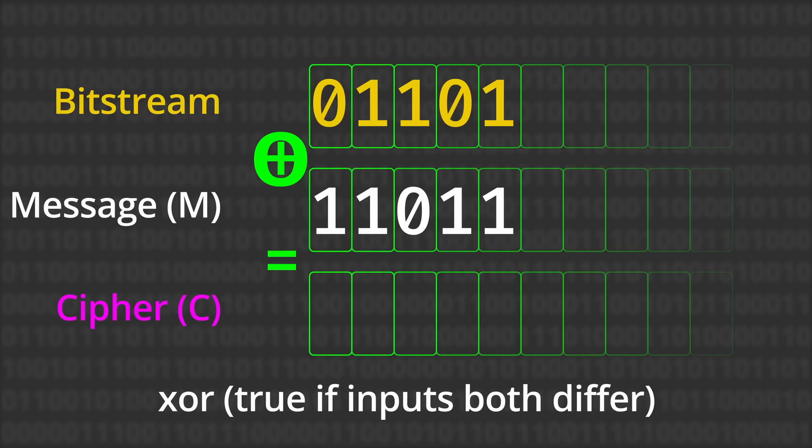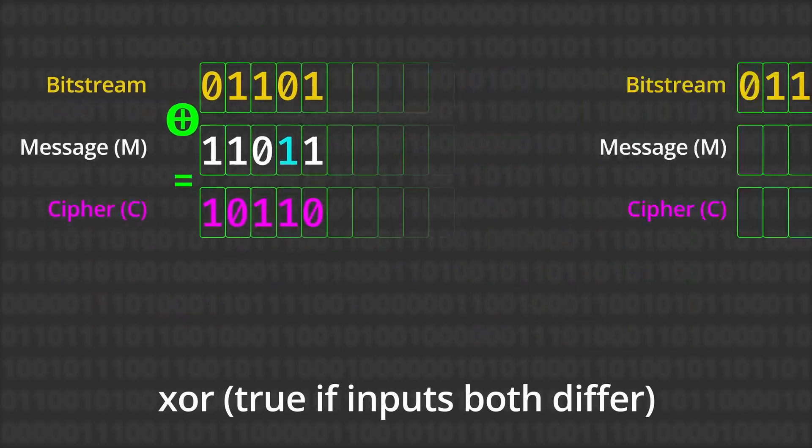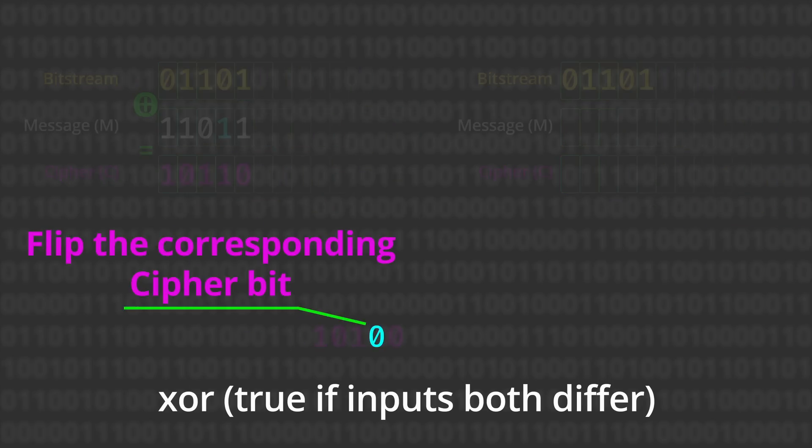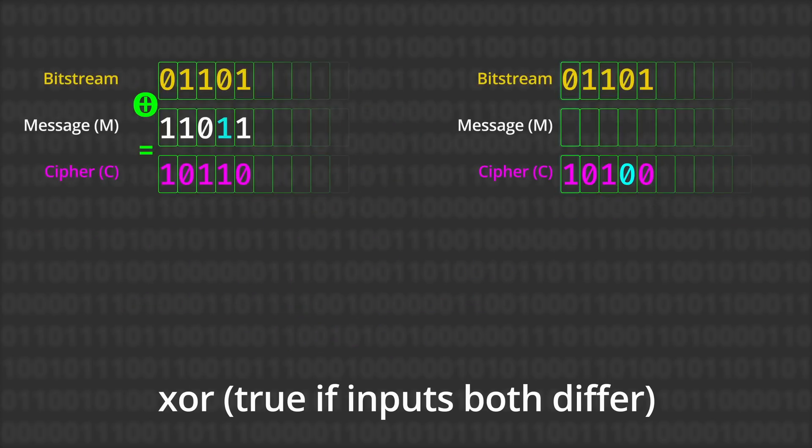You will then take the ciphertext, which is the altered ciphertext, which is 1 0 1 0 0, right? This 1 has been changed into a 0, so let's call that c prime, the changed ciphertext.